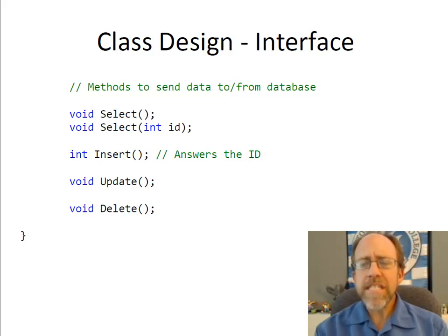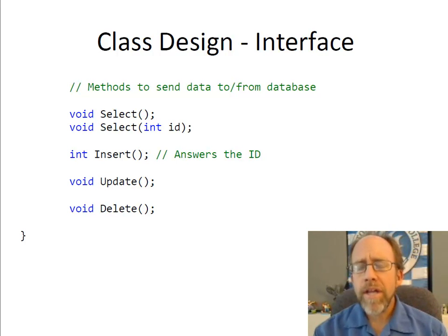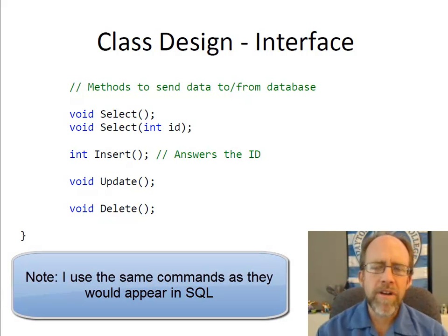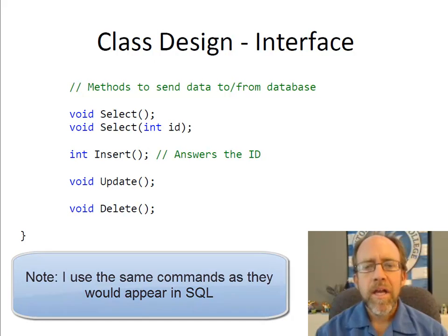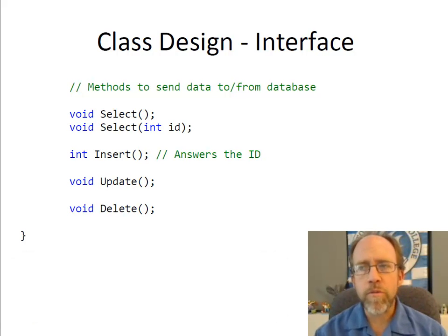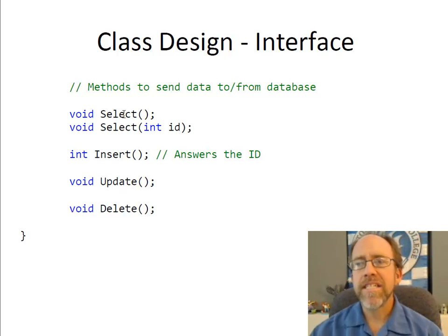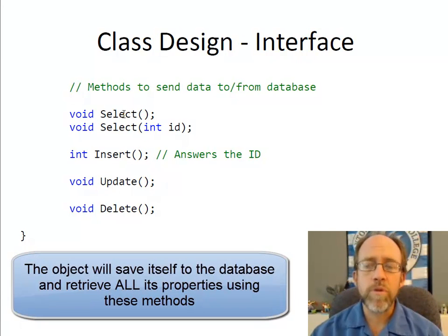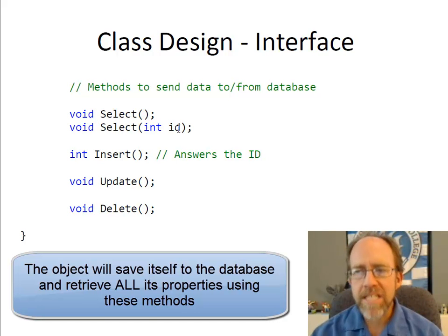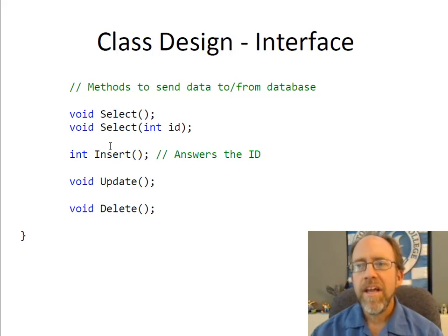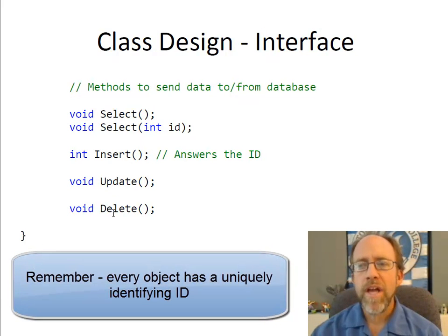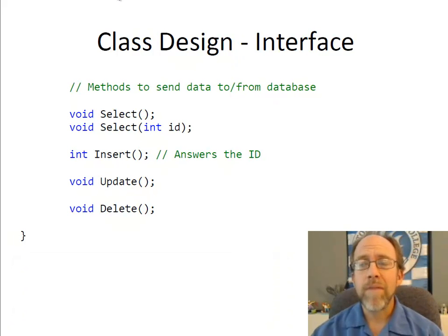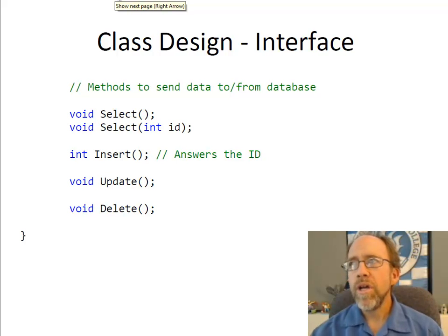I have four key required implemented methods of my XMLPropertyObject: select, insert, update, and delete. This object can select itself — if its ID is set, it pulls itself by the ID; or it can be passed an ID, which sets the ID and fills everything out. It can insert itself into the database, which returns the ID as an integer. It can update itself in the database if its properties have changed. And it can delete itself from the database. The object has the ability to save and retrieve itself.